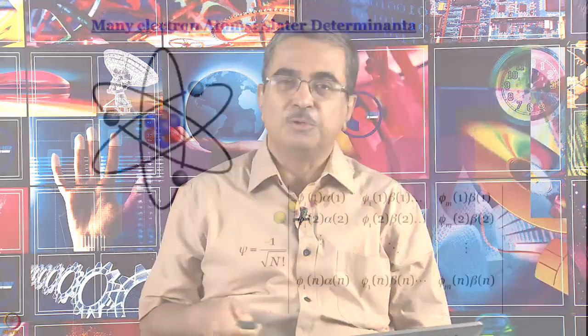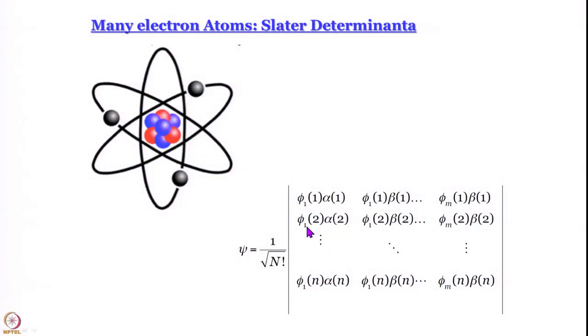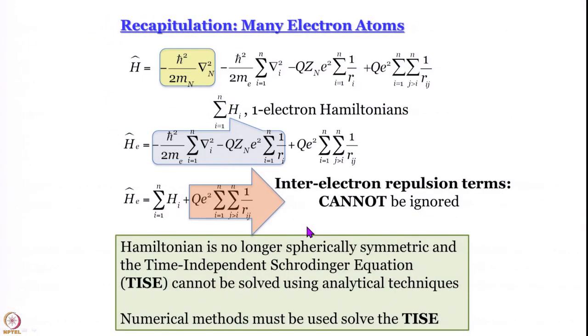We are learning about many-electron atoms. Today we are going to learn how to write their wave functions using a particular form — what are called Slater determinants, which looks sort of like this. But before that, let us recapitulate very quickly what we have studied in the earlier modules.